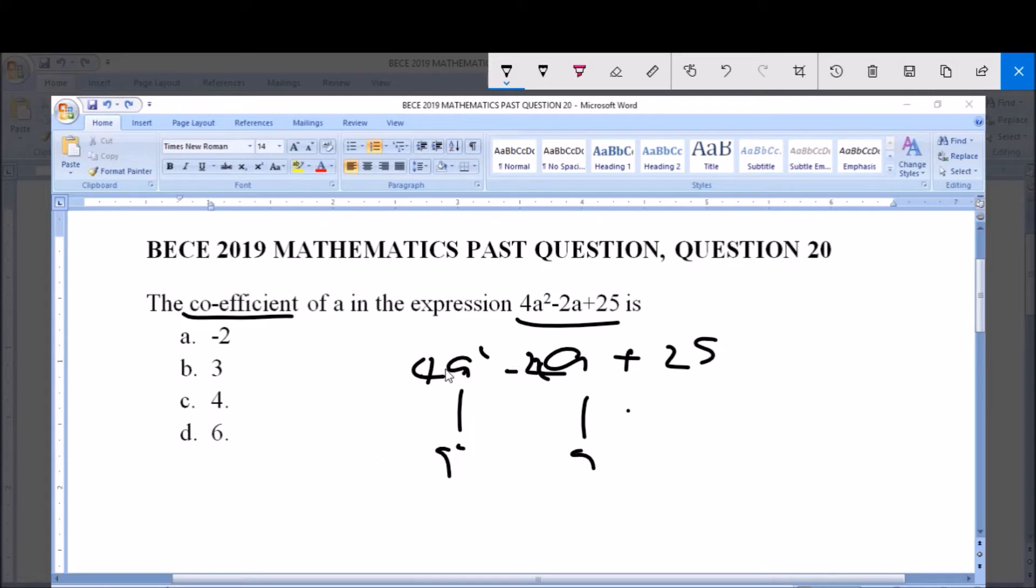So this 4 here is a coefficient of a squared. Because you can say a squared, but now when you have 4 of this a squared - that's a squared plus a squared plus a squared plus a squared - you write that as 4a squared. This simply means that you have 4 of this a squared, and therefore this 4 is the coefficient of a squared.